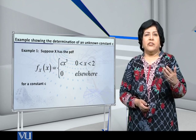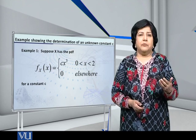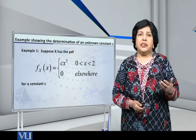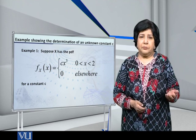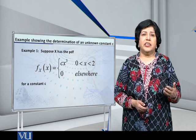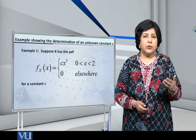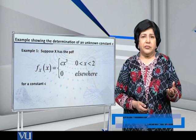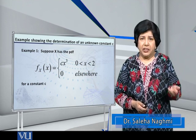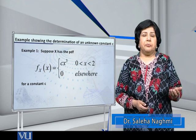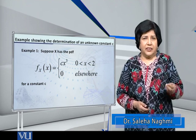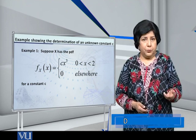So let's consider a random variable x for which the PDF is given by f(x) = cx³, and the interval on which it is defined is 0 < x < 2.